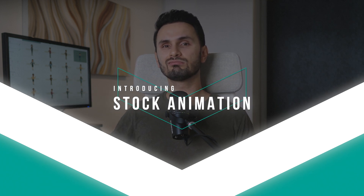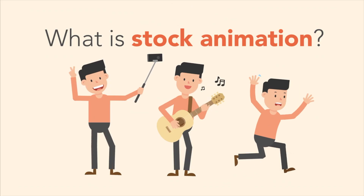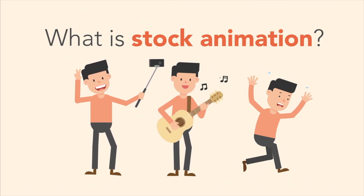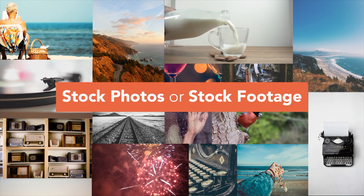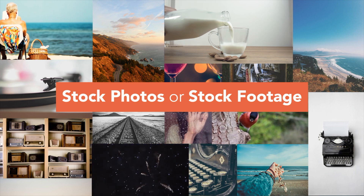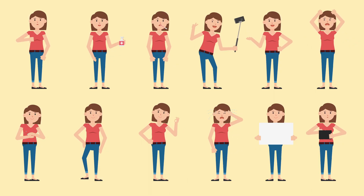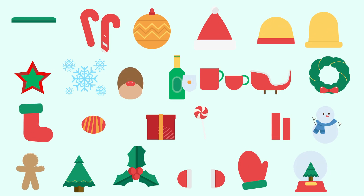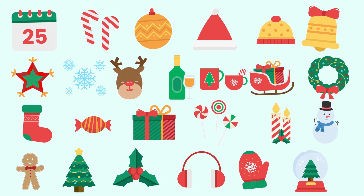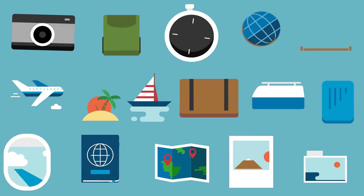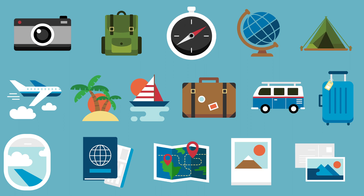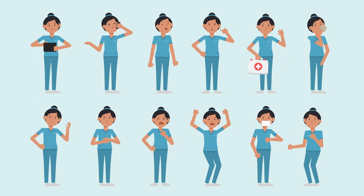Now, you might be wondering, what is stock animation? It's an animation category in the stock assets industry. So if you've ever heard of or used stock photos, stock footage videos, or royalty-free music tracks before, it's literally the same thing but for animation. Stock animation videos are basically a library of ready-to-use animated assets that you can purchase and license to use in your own video project. They're built by professionals, so they look amazing and usually come in sets of characters or icons that you can mix and match to create professionally looking videos with ease.